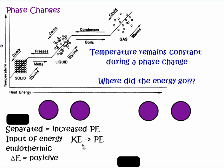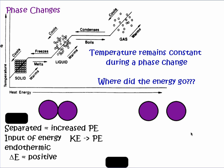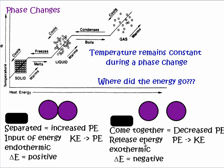Energy has to be put into a system — kinetic energy changes into potential energy in order to separate particles from each other. This is true for bonds and electrons in an atom, and also true for molecules separating from each other, which increases their potential energy. The opposite is also true: when particles come together from a liquid to a solid, potential energy decreases and gets converted back into kinetic energy, which is what creates that plateau in temperature.